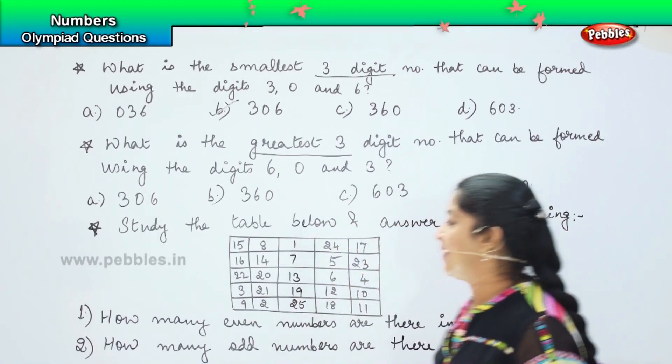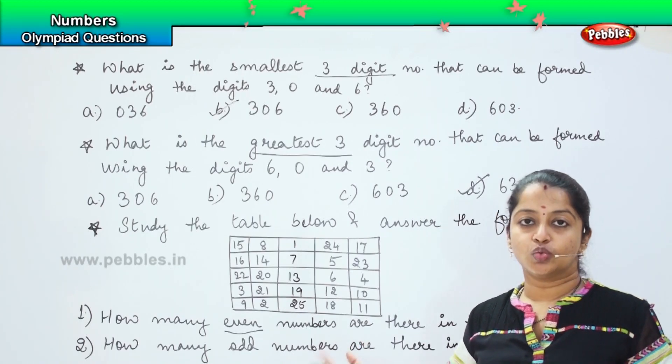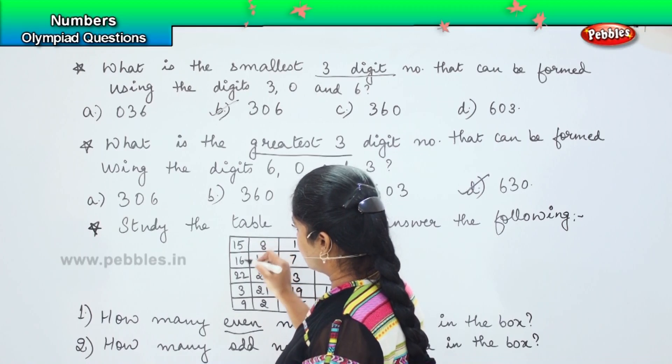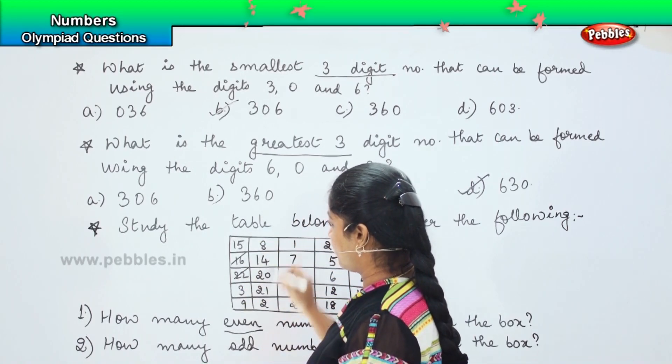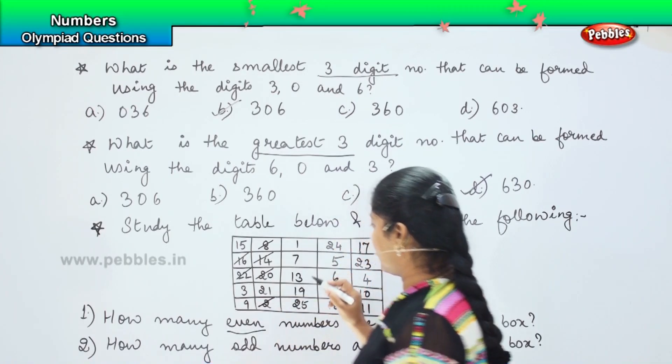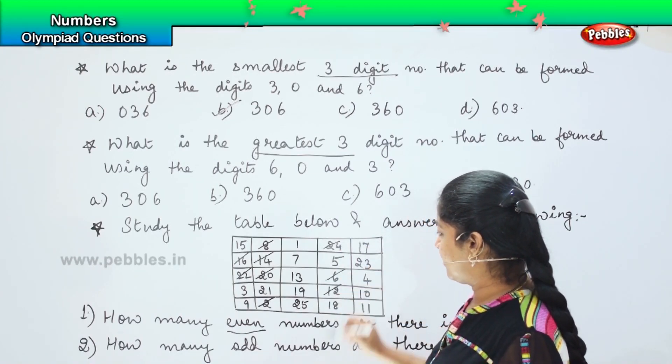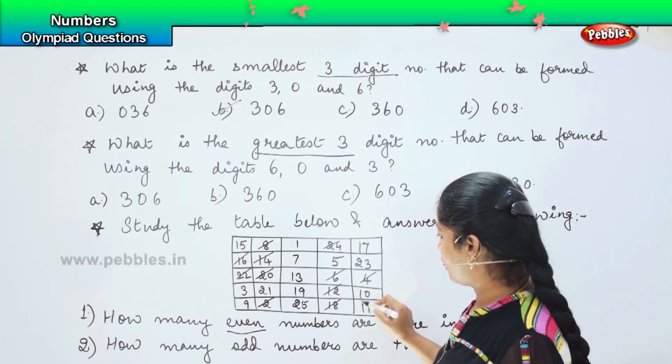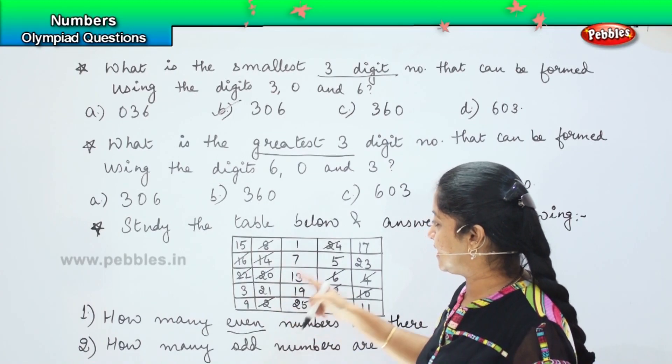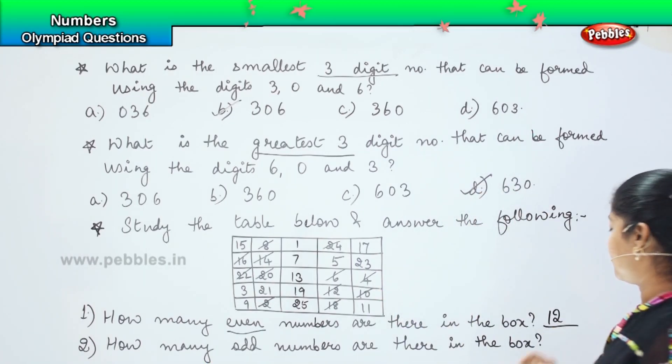Now coming to the first one which talks about the even numbers. We have learnt earlier that the numbers ending with 0, 2, 4, 6 and 8 are called even numbers. Let us try to figure out what are the even numbers here. 16, 22, 8, 14, 20, 2, then this set you have all odd numbers, right. 24, 6, 12, 18, then 4 and 10. Shall we count the total number of even numbers? 1, 2, 3, 4, 5, 6, 7, 8, 9, 10, 11 and 12. We have 12 even numbers in the given lot.